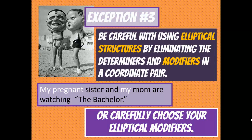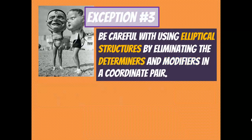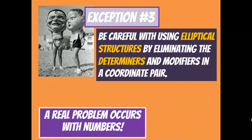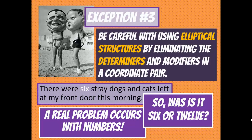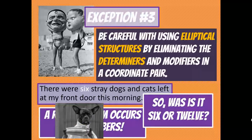We have to be careful when we assume the reader knows where modifiers and determiners go — sometimes it's better to just come out and say it. The real problem occurs with numbers. For example: 'There were six stray dogs and cats left at my front door this morning' — I can't tell whether that's six dogs and cats total, or six dogs and six cats. Are there six or twelve?